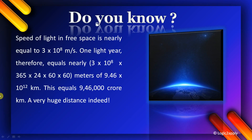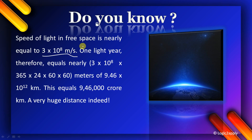Do you know — the speed of light in free space is nearly equal to 3 × 10⁸ meters per second. This means light travels that many meters in one second through space.